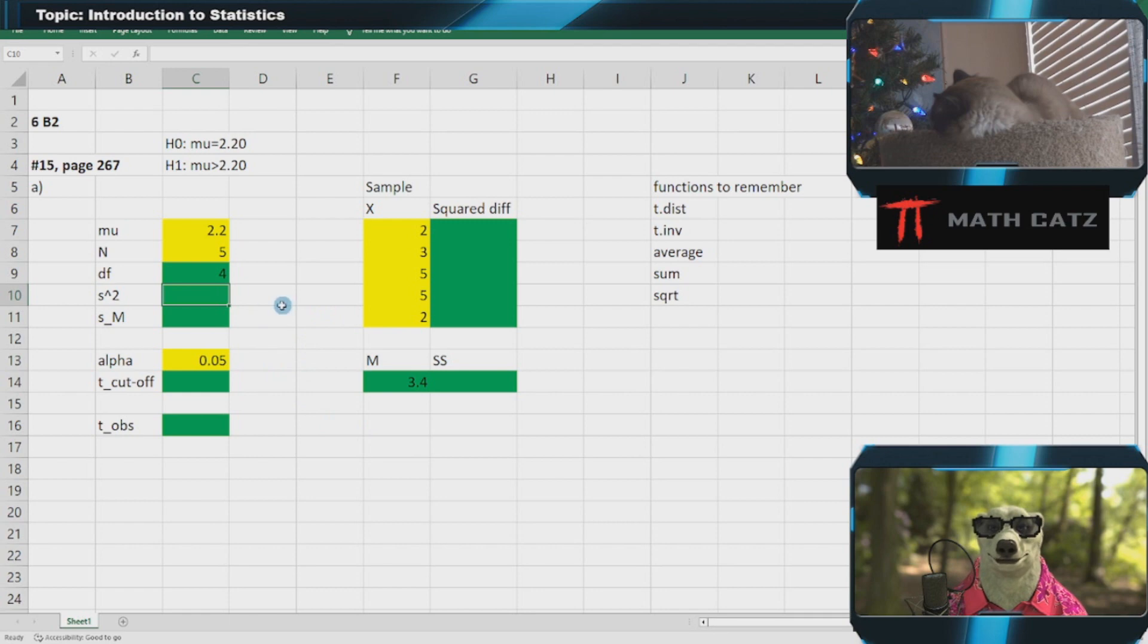There are a few steps for calculating the variance of this sample. First, the square of the difference between the raw score and the sample mean. I tell Excel with an equal sign I'm going to do a calculation: the raw score take away the mean difference, and then I'm going to square that.